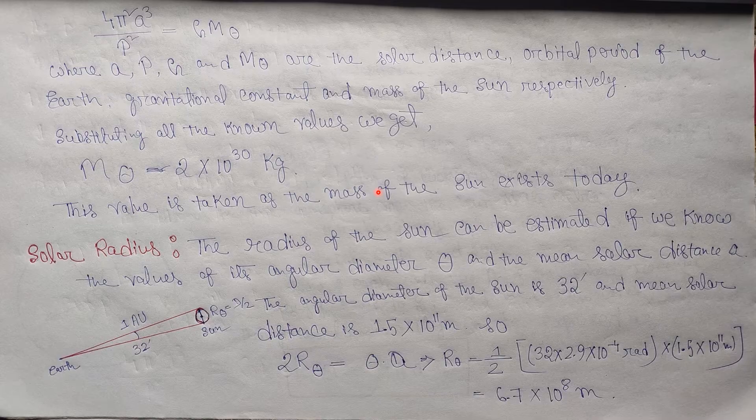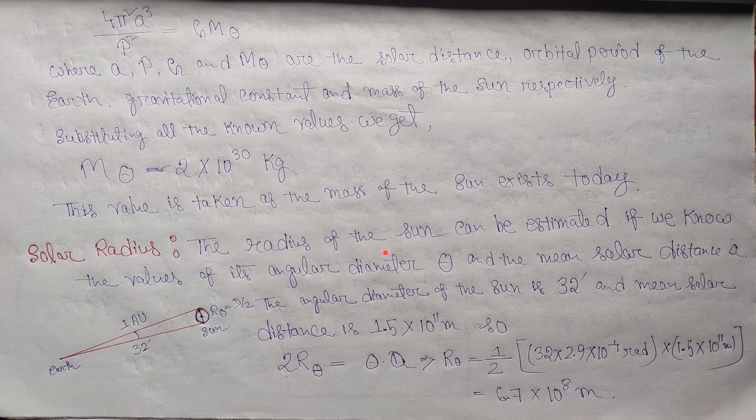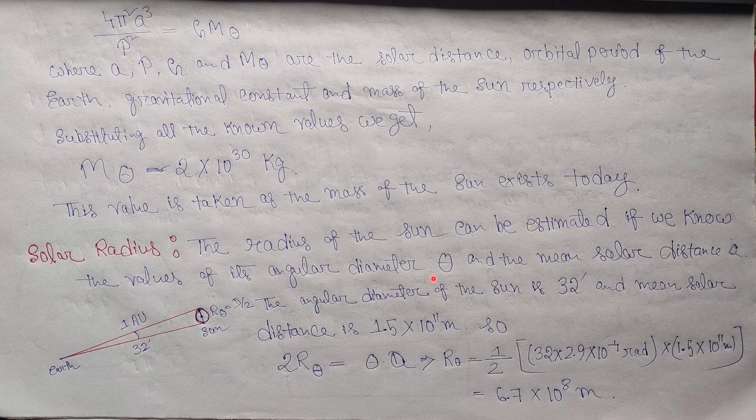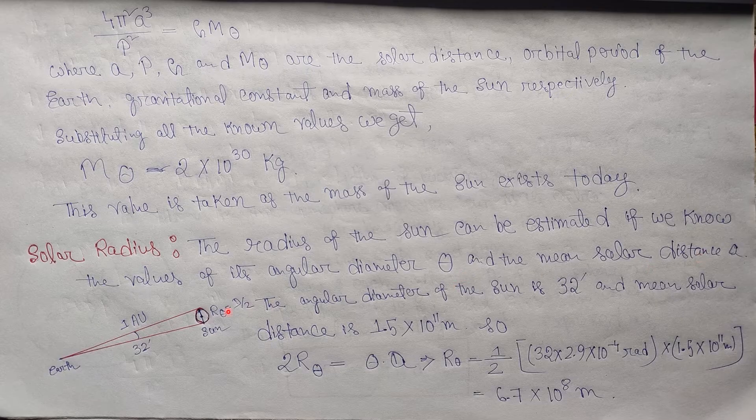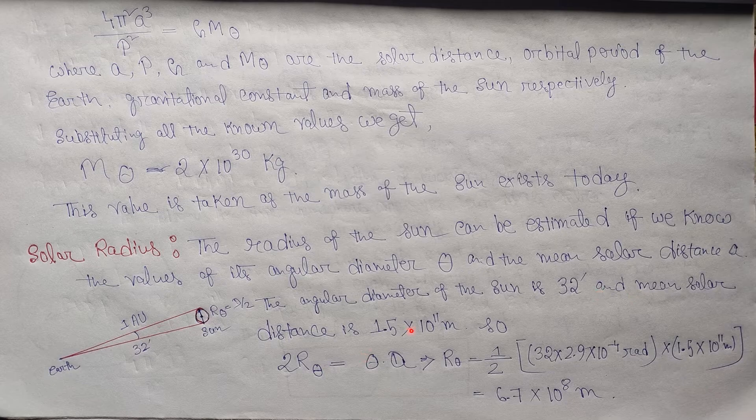Solar radius: the radius of our sun can be estimated if we know the values of its angular diameter θ and the mean solar distance a. So from this figure, you can see that here is our earth and this is our sun. The angular diameter of the sun is 32 seconds. So from observation, we get the angular diameter of our sun which is about 32 seconds, and the mean solar distance is 1.5 × 10^11 meters.